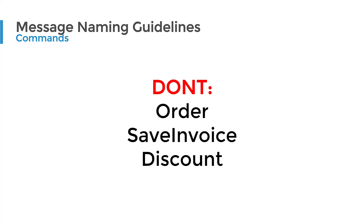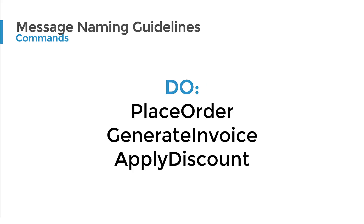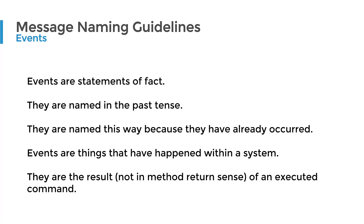Avoid CRUD terminology like create, read, update, delete, or save. Don't just use a noun alone — for example, don't just call something 'order', whether order is the verb or the noun. Avoid things like 'save invoice' or 'discounted' — what does 'discount' alone even mean? Is it the entity you're working on, or the action of discounting? Go back to the do examples: place order, generate invoice, apply discount — verb with a noun.